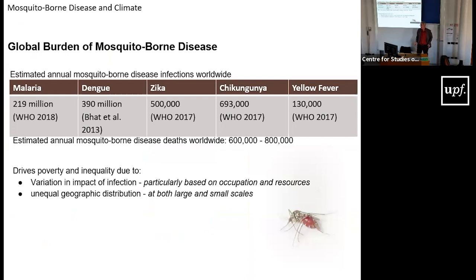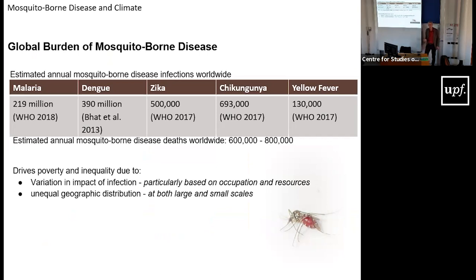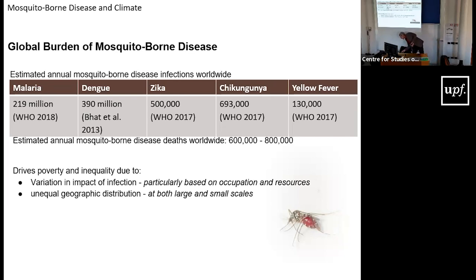Why do we care about mosquito-borne disease? It places an enormous burden on society. Malaria is the mosquito-borne disease that's gotten the most attention for good reason — it has historically had the highest numbers in terms of annual cases and remains highest in terms of deaths.